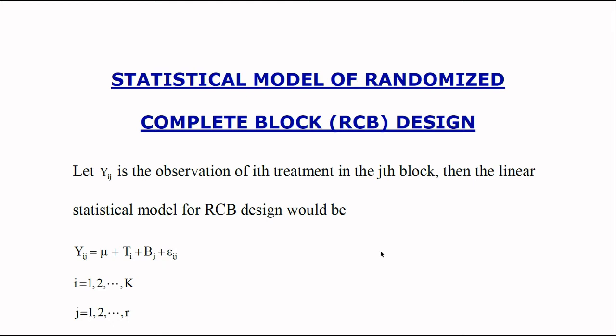Here, mu is the overall mean effect, ti represents the effect of ith treatment, bj represents the effect of jth block, and eij is the random error.